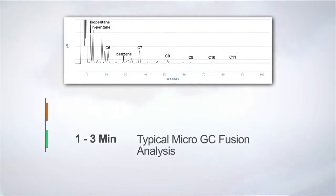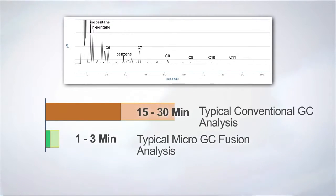A typical Fusion analysis is 1 to 3 minutes, compared to 15 to 30 minutes for conventional GC analysis. The improved sample throughput results in significant savings in analysis cycle time.